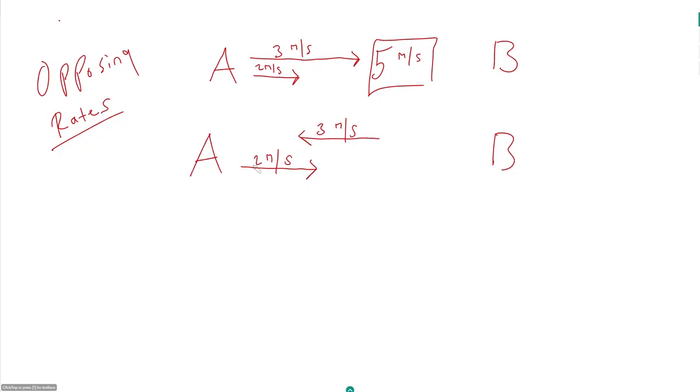Now in this case, after one second the kid has moved three meters to the left but the walkway has pushed him back two meters, so it's really like he is moving forward at a rate of one meter per second against the walkway.